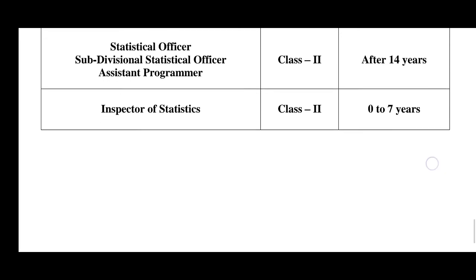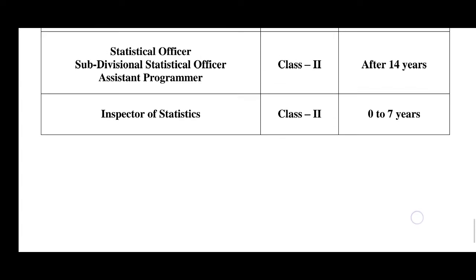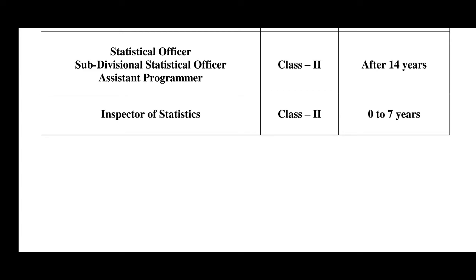For career progression, first you join as Inspector of Statistics, which is a Class-II gazetted post. After a minimum of 7 years, you are eligible for the next promotion. The next promotions will be to Statistical Officer, Sub-Divisional Statistical Officer, and Assistant Programmer. The Inspector of Statistics post sits at the entry level of this Class-II category.